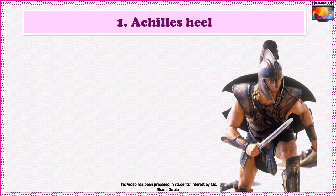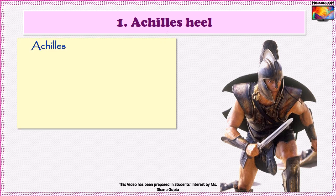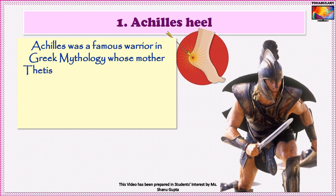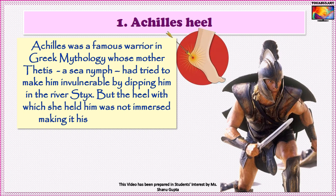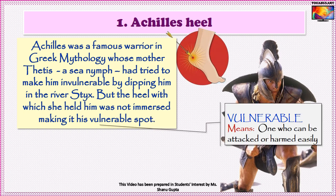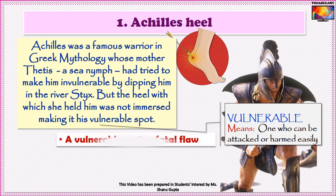Our first idiom is Achilles' heel. Achilles was a famous warrior in Greek mythology whose mother had tried to make him invulnerable by dipping him in the river Styx. But the heel with which she held him was not immersed, making it his vulnerable spot. While Achilles remained an undefeated warrior, he ultimately died because of an arrow that pierced his heel. So Achilles' heel means a weak or vulnerable spot of someone — a fatal flaw which can even bring about his or her downfall.